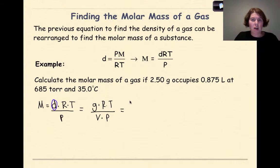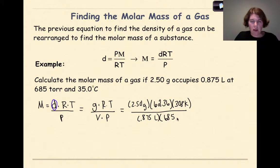Instead of solving for density, I'm going to have 2.50 grams. The R that I'm going to use here is the R that's associated with torr, which is 62.36, and I'm going to multiply that times my temperature, which is 35 degrees Celsius, which we'd be switching into Kelvin, and that'd be 308 Kelvin. We're going to divide that by the volume, which is 0.0875 liters, and then multiply that finally times the pressure, which is 685 torr. So if I work this out, I'm going to get 80.1 grams per mole.